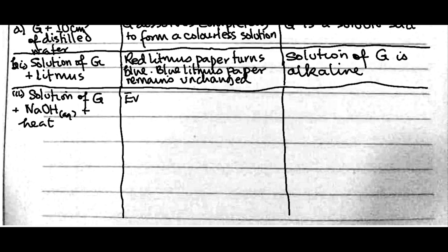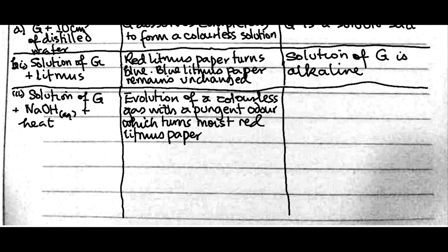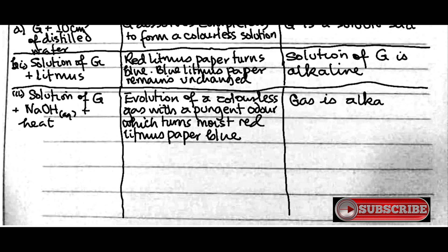Evolution, not effervescence, evolution. Because you are heating. Effervescence is the release of the gas without heating, while evolution is the release of a gas with heating or when heated. So, evolution of a colorless gas with a pungent smell or odor, which turns moist, it must be moist, moist red litmus paper, paper blue. That's the gas that made the red litmus paper here turn blue. So, what does that mean? That a gas is what? Alkaline. That's an alkaline gas is evolved.